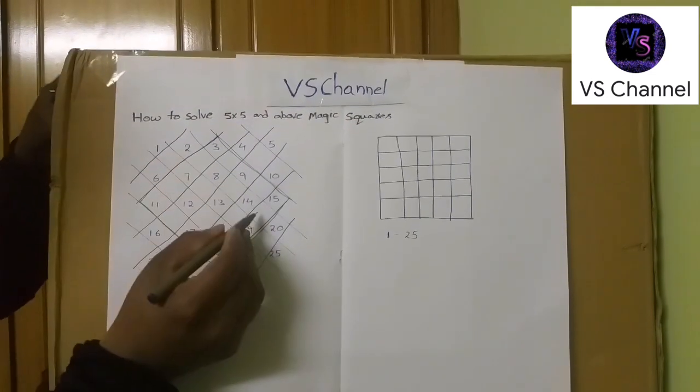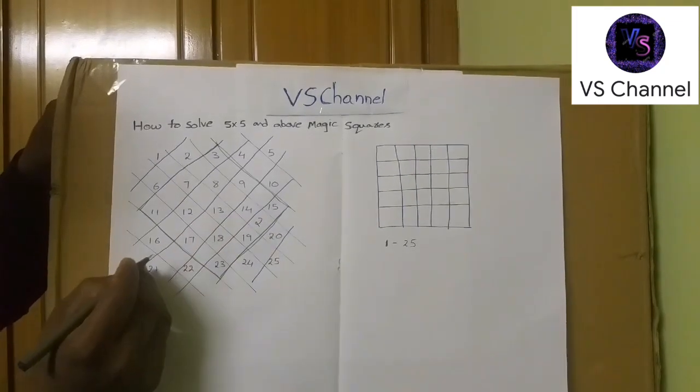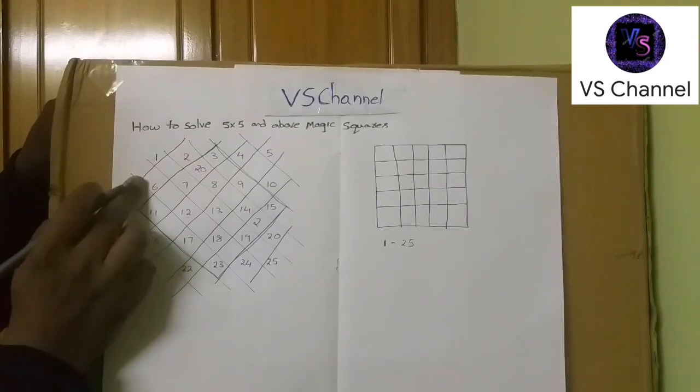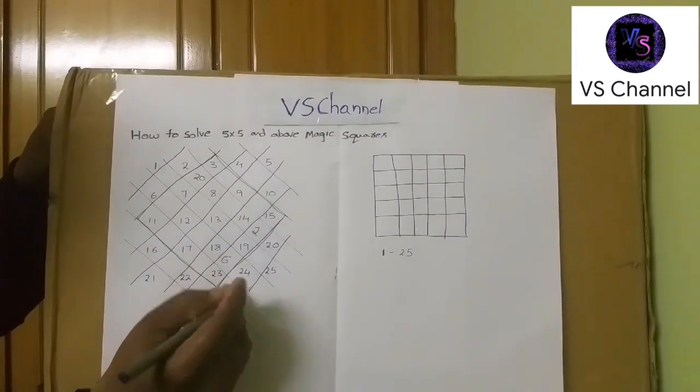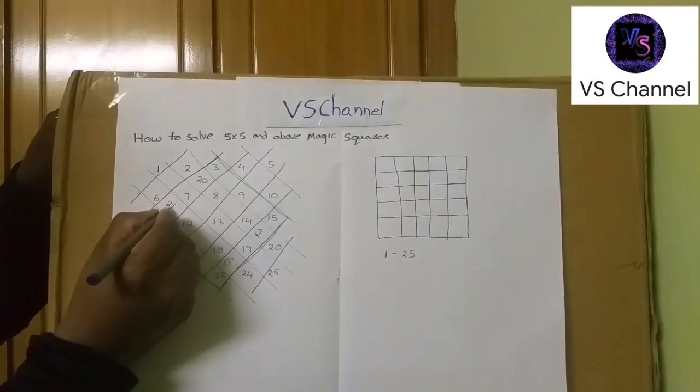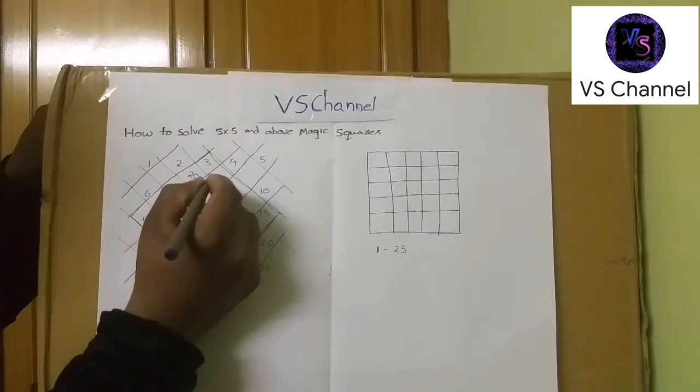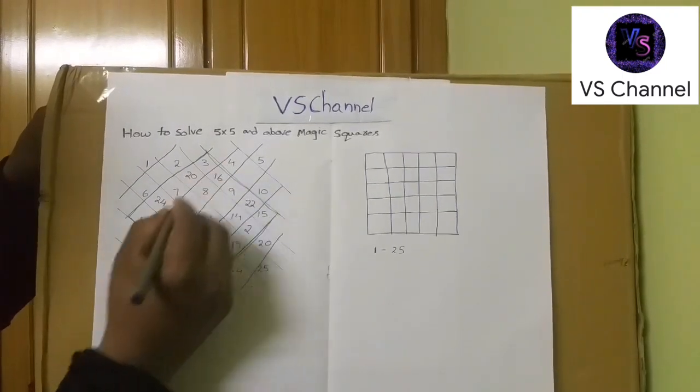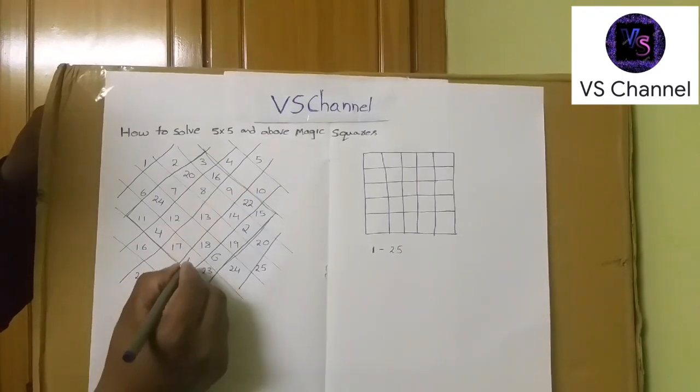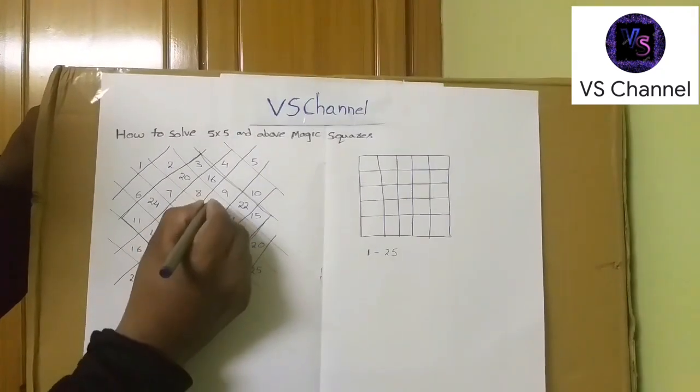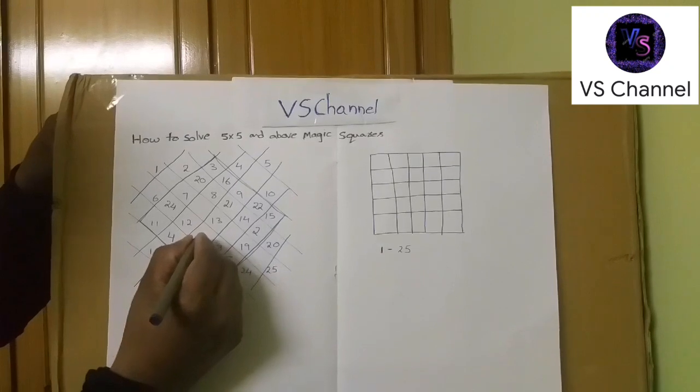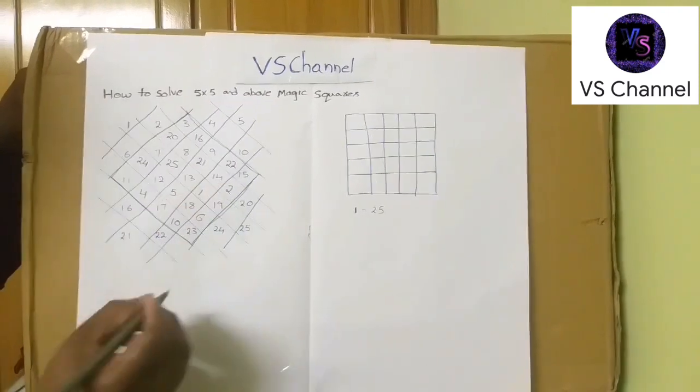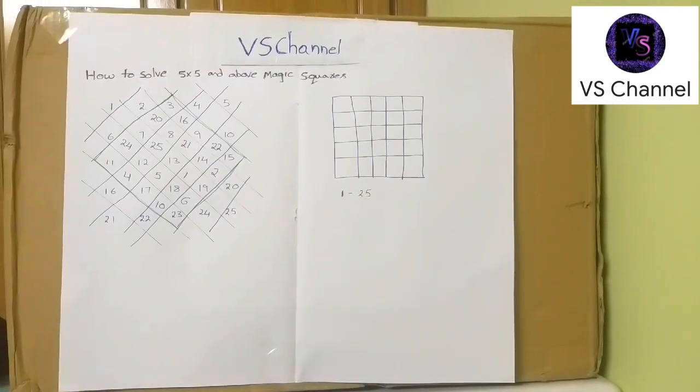So 2 we can represent opposite side. Similarly we have 20, we can represent opposite side. Similarly we have 20, we can represent opposite side. 6 we have here, we can represent opposite side. 24 here we can represent opposite side. 16 we have the same row, we can represent opposite side. 22 we can represent here. And 4 we can represent here. 10 we can represent here. And 21 we can represent here. 5 we can represent here. 25 we can represent here. And 1 we can represent here.